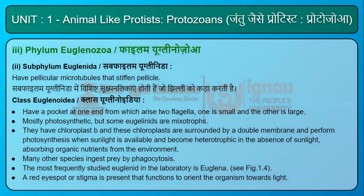Subphylum Euglenida has follicular microtubules that stiffen the pellicle. Class Euglenoidea has a pocket at one end from which arise two flagella — one small and one large. Most are photosynthetic, but some Euglenids are mixotrophs. They have chloroplasts surrounded by a double membrane; they perform photosynthesis when sunlight is available and become heterotrophic in the absence of sunlight, absorbing organic nutrients from the environment. Many species also ingest prey by phagocytosis. The most frequently studied Euglenid in the laboratory is Euglena (Fig. 1.4). A red eye spot or stigma is present that functions to orient the organism towards light.